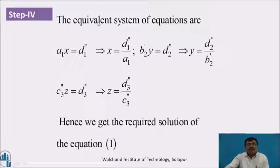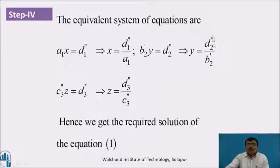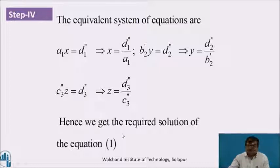Step 4: the equivalent system of equations are: a1·x = d1'', which gives x = d1''/a1; b2'·y = d2'', which gives y = d2''/b2'; c3''·z = d3'', which gives z = d3''/c3''. Hence we get the required solution of the given equation 1.